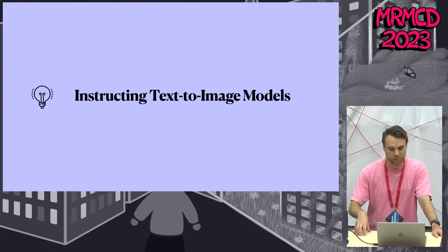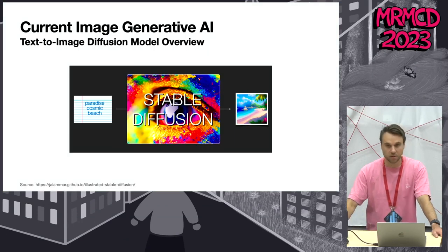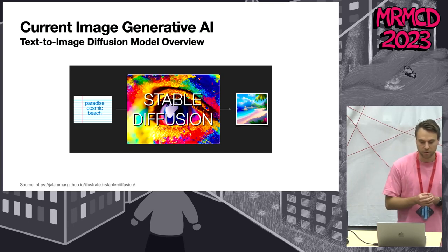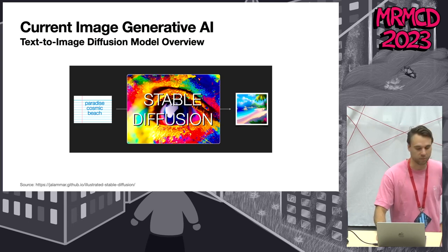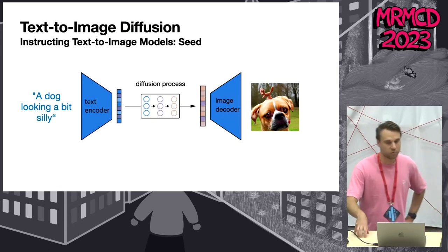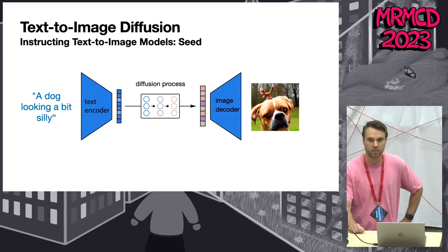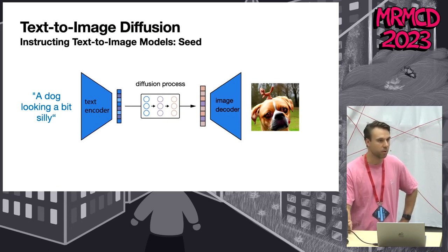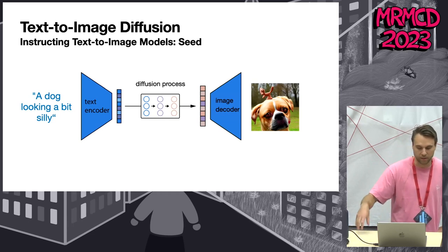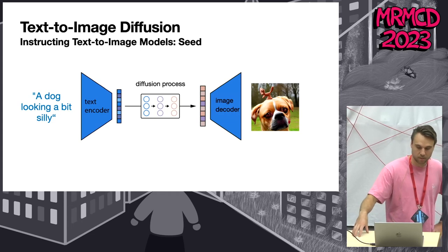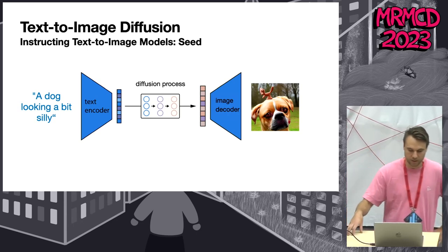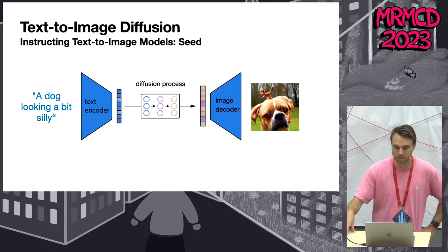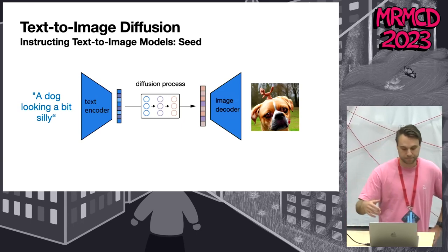Now I'll go into more detail on how diffusion models work. The default setup is: we have a text and want to generate an image aligned to that text during the diffusion process. Most current image-generation models use diffusion, which can be separated into three parts: a text encoder — usually a pre-trained language model — then the diffusion process, and finally an image decoder that generates a high-resolution image.